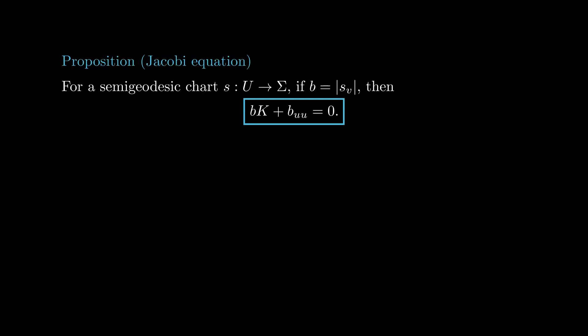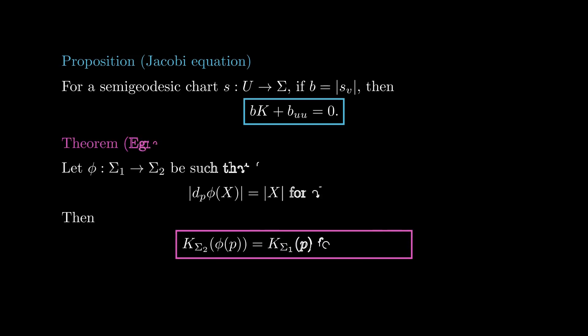This important formula will be used multiple times later, but for now we will use it to prove a classic theorem by Gauss. The theorem Egregium states that if we have an isometry between two surfaces, then it respects the Gauss curvature. In other words, if there is a smooth function from one surface to another, with the property that the length of the tangent vectors are preserved, then the Gauss curvature is also preserved.